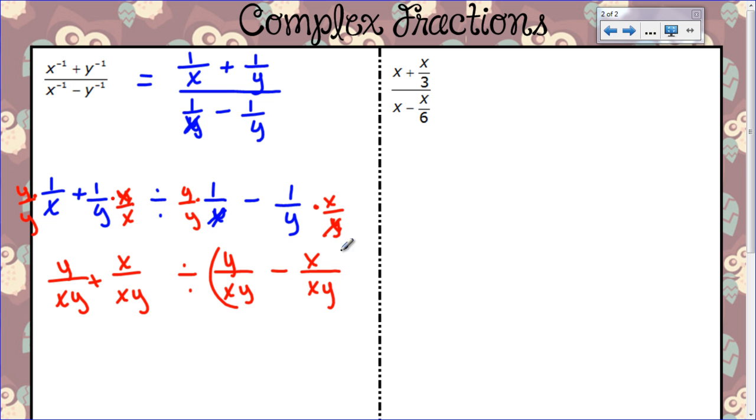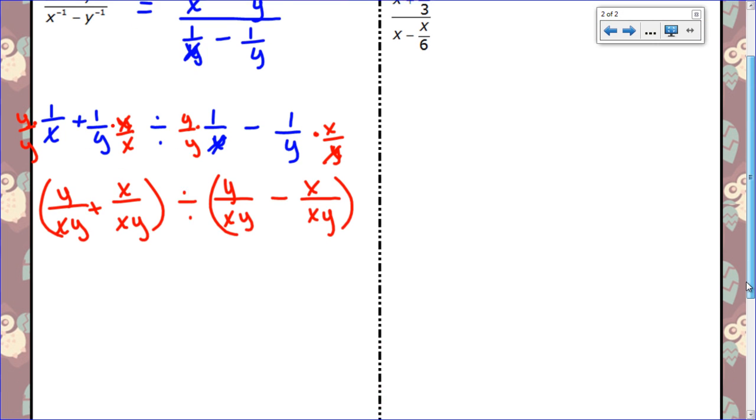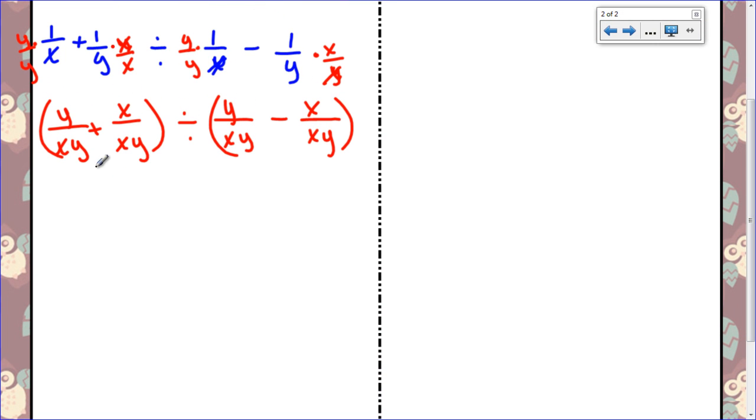I'm going to put these in parentheses because I need to treat them separately. I'm going to have to add and subtract first. So I'm going to do this addition first. Well, y plus x just becomes y plus x and then my denominator is xy divided by. Now y minus x is y minus x. My denominator is still xy.